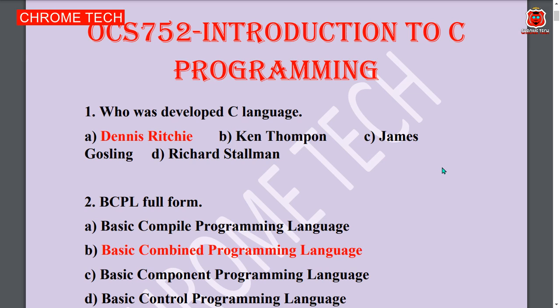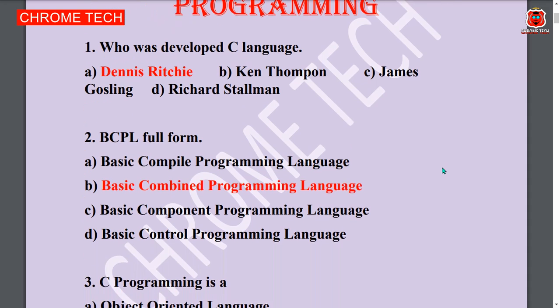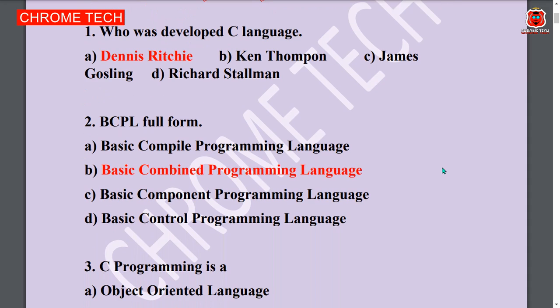First question: Who has developed C language? Dennis Ritchie. Option A is the answer. Second question: BCPL full form — Basic Combined Programming Language. Option B is the answer.